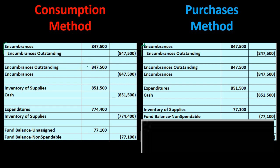Next, we receive the inventory — at a slightly different actual amount than the original estimate on the purchase order. Before we can put the inventory on the books as either an asset or an expenditure, we need to reverse the encumbrances entry, since encumbrances is just a holding account until we can record the inventory properly. We reverse exactly the prior transaction, and this reversal is the same under both methods.